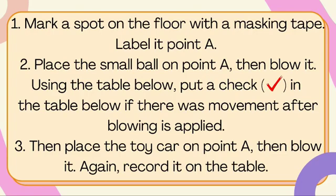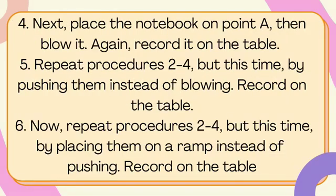Then place the toy car on point A and blow it. Again, record it on the table. Next, place the book on point A and blow it. Again, record it on the table. Repeat the procedures but this time by pushing them instead of blowing. Record it on the table. Now, repeat the procedures but this time by placing them on a ramp instead of pushing. Again, record it on the table. You may pause the video while doing this activity.